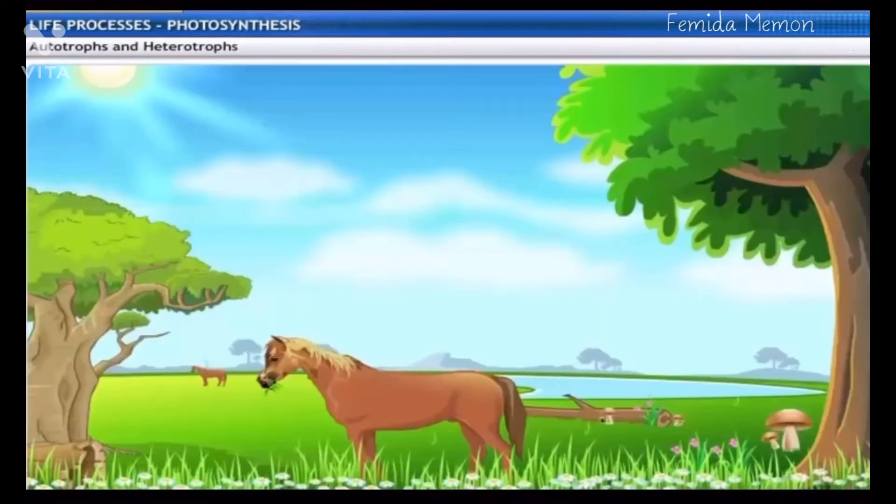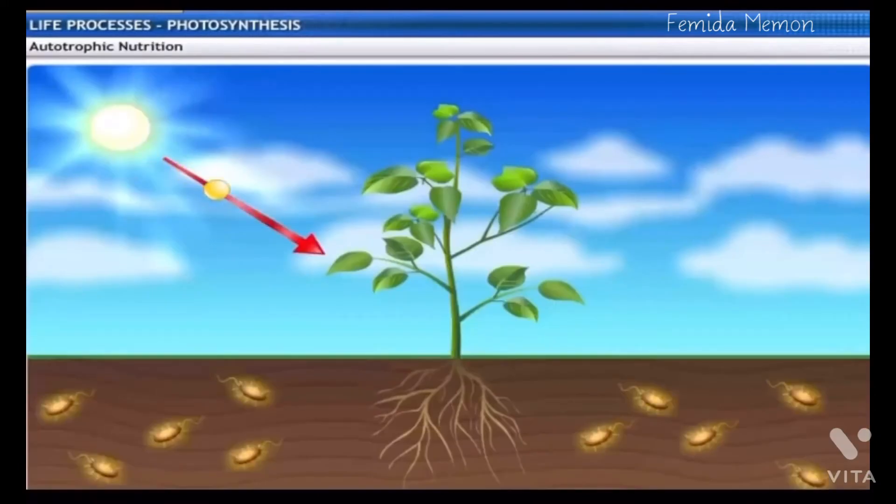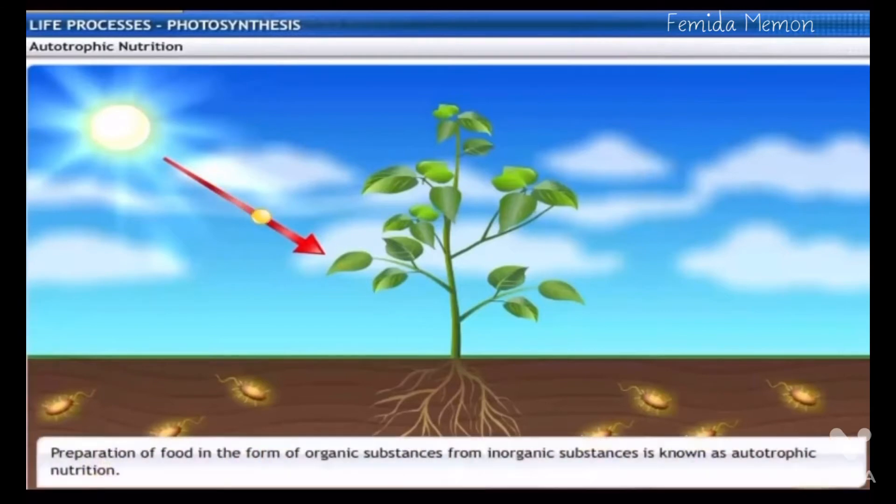The nutritional processes of living organisms are decided by how complex the organisms are. Plants and a few bacteria use inorganic substances to prepare their food in the form of organic compounds. So, they are called autotrophs. The process of nutrition in autotrophs is called autotrophic nutrition.